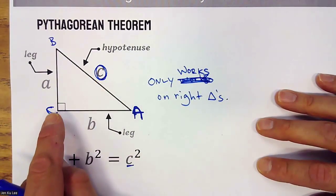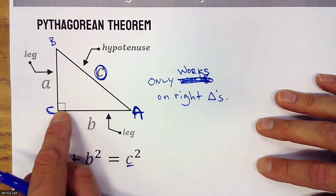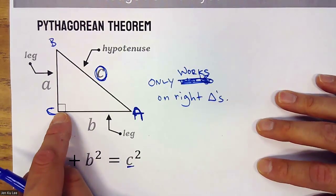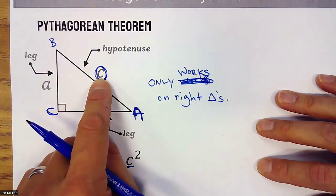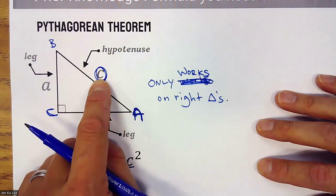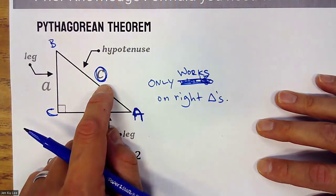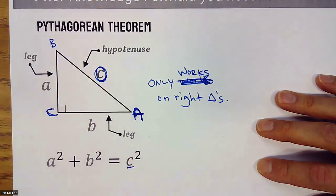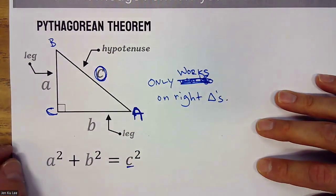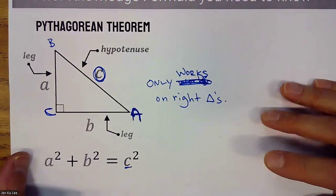Locate where the 90-degree angle is, take the opposite side, and that is your C — the hypotenuse. A and B are interchangeable. Remember, the Pythagorean theorem only works on right triangles.